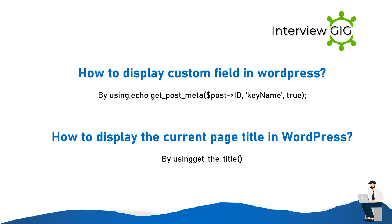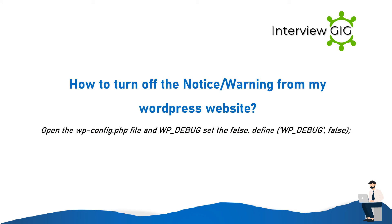How do you display the current page title in WordPress? By using the_title(). How do you turn off notices and warnings from a WordPress website? Open the wp-config.php file and set WP_DEBUG to false: define('WP_DEBUG', false).